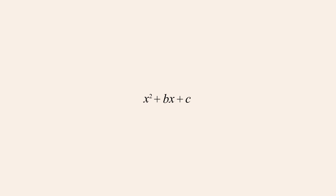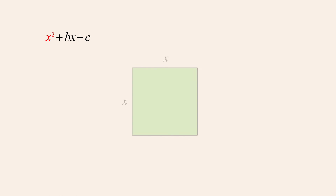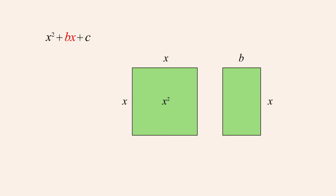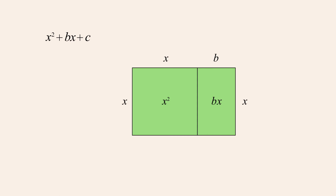We can show why this is true by representing the quadratic by a group of squares and rectangles. We will represent the x-squared term by a square with sides of length x. The area of that square is therefore x-squared. Likewise, we will represent the term bx by a rectangle with sides of length b and x, and thus an area of bx, or alternatively, two smaller rectangles each with half that area.